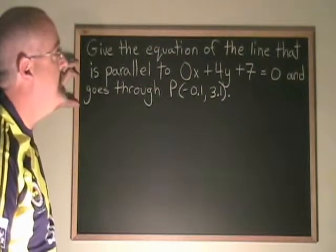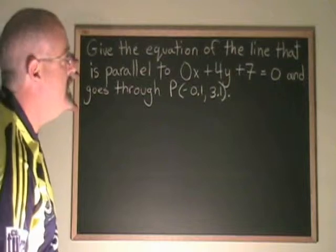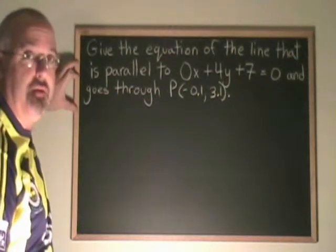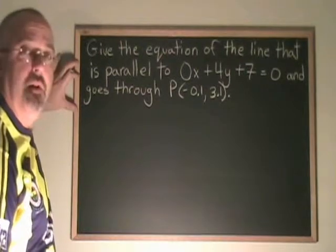In this example, we are asked to give the equation of the line that is parallel to 0x plus 4y plus 7 equals 0 and goes through the point negative 0.1, 3.1.